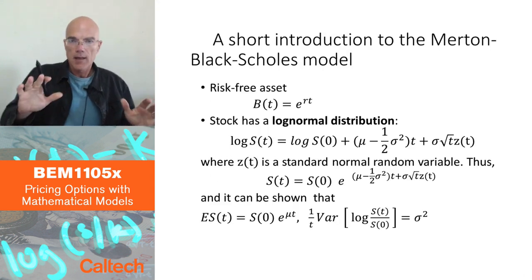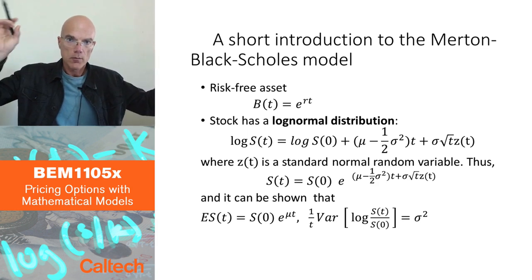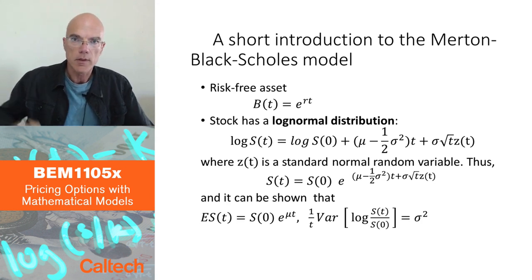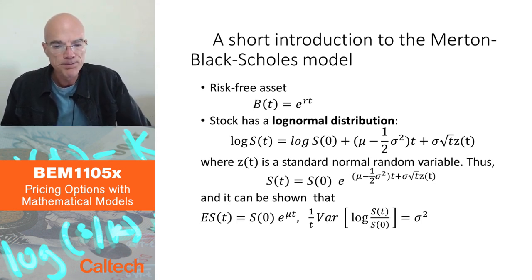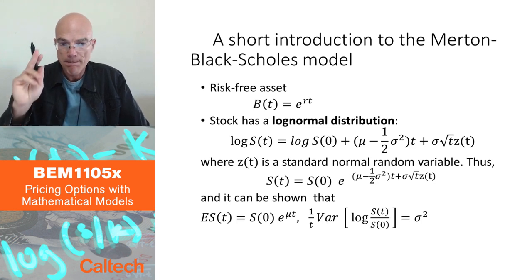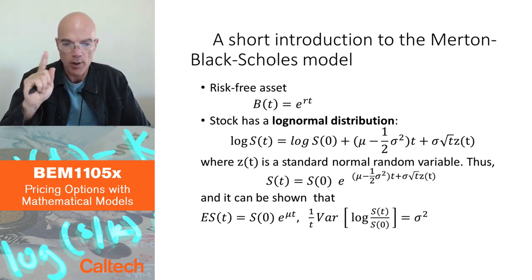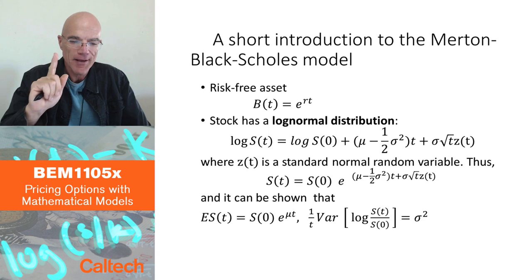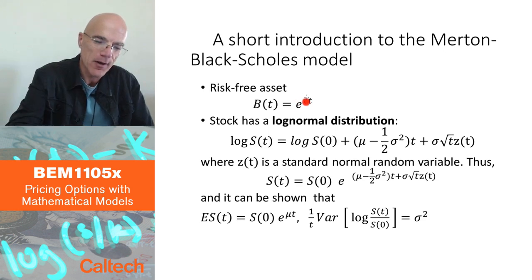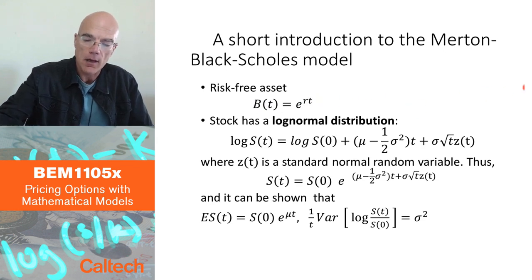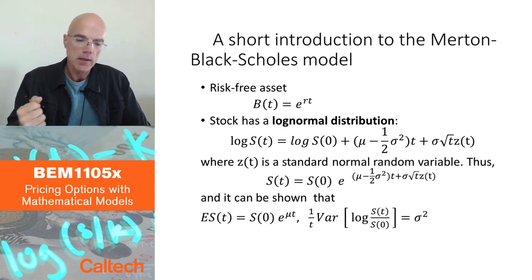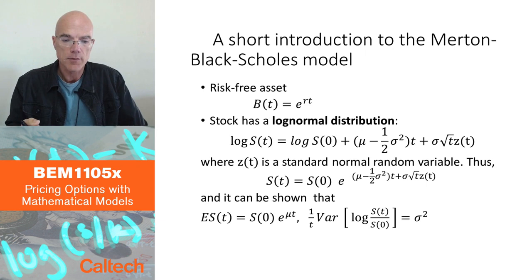Let me give you a one-slide introduction of what the model is, without going into mathematical details, and then we'll be more precise about the mathematics behind it. There will be one risk-free asset — the bank account — with a continuous compounding constant interest rate R: B(T) = e^(RT). And there will be a stock which has a so-called log-normal distribution, meaning that the logarithm of the stock price will have a normal distribution.